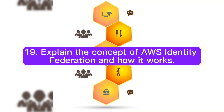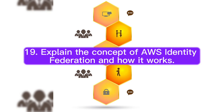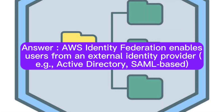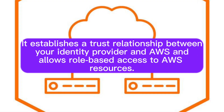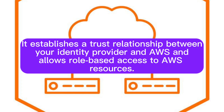Question 19: Explain the concept of AWS Identity Federation and how it works. AWS Identity Federation enables users from an external identity provider, for example Active Directory or SAML-based, to access AWS resources without the need for AWS IAM users. It establishes a trust relationship between your identity provider and AWS, and allows role-based access to AWS resources.